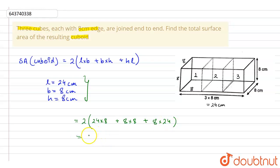If we simplify this we will get 2 into: 24 into 8 is 192, 8 into 8 is 64, and 8 into 24 again is 192.